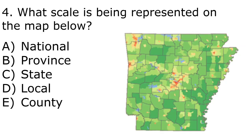Using that same stimulus again — the correct answer is C, state. We're looking at a state scale, specifically the state of Arkansas, meaning we're looking at a state scale. It's not local or county scale because we're not looking at a local area. If you think of local areas, think of your community. I wouldn't consider a state to be my community; at most, my county would be my community.